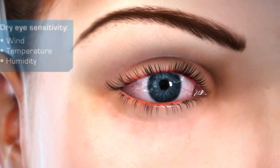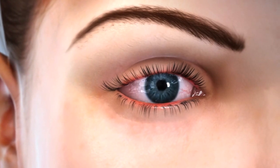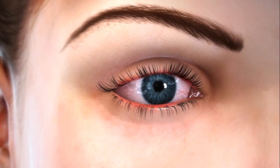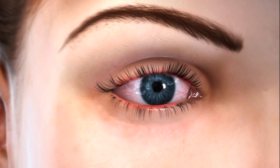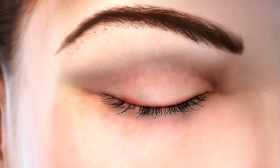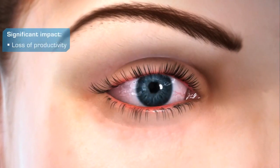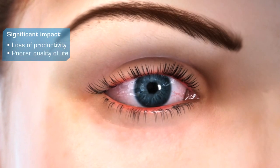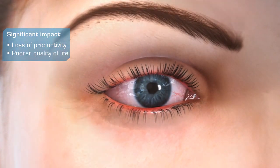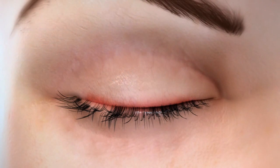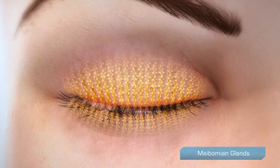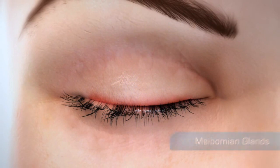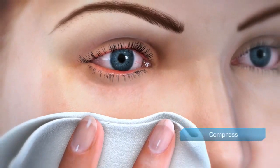Interference with normal vision may become noticeable. Often the individual considers it part of the normal aging process, when in fact, dry eye can have a significant impact, causing loss of productivity and poorer quality of life. One of the most common treatments for meibomian gland dysfunction and associated dry eye is at-home warm compress therapy.